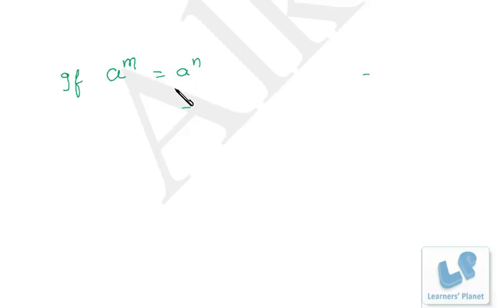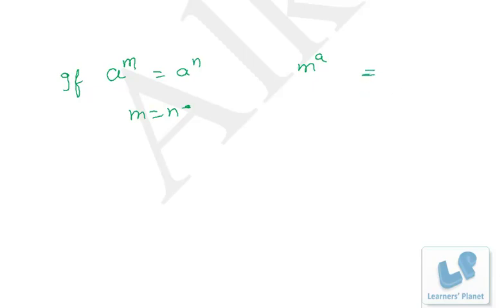Now friends we have one more property of exponents. Suppose I have a number a, and a raised to m is equal to a raised to n. So if a raised to m is equal to a raised to n, then m will be equal to n. Similarly, if m raised to a is equal to n raised to a, then m will be equal to n. So if the base is same, the power will be same, and if the power is same, the base will be same.